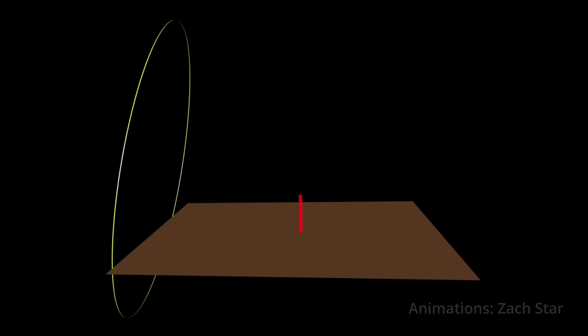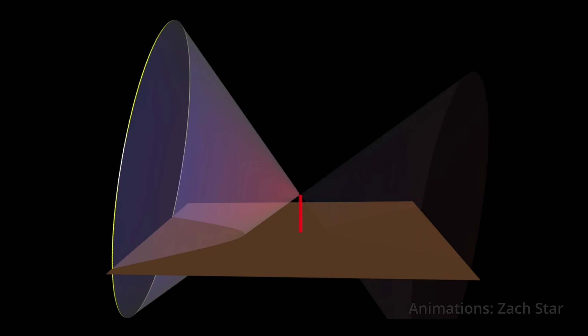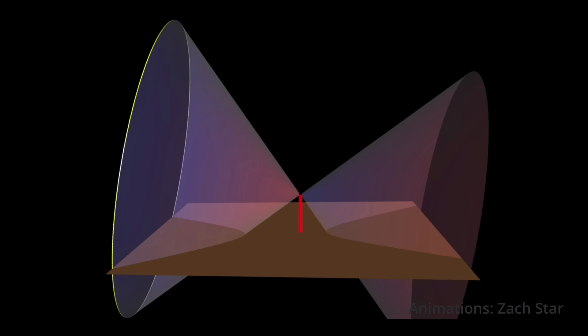This works because the sun travels around in a circle in the sky throughout the day. The lines that connect the sun and the brass sphere form a cone, and the plane of the sundial slicing this cone creates these hyperbolas.